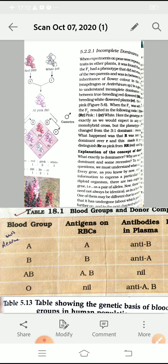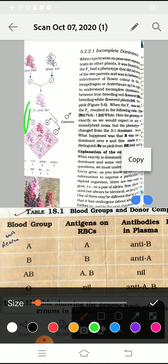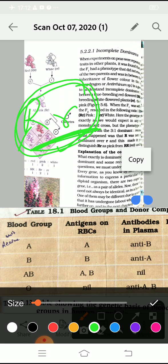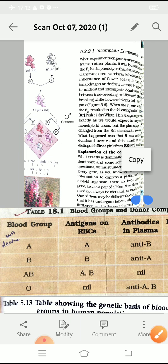So this phenomenon is not universal — we cannot always say that a character will be either dominant or recessive; it can sometimes be incomplete also. Incomplete dominance means that both genes express themselves neither as dominant nor as recessive. Both R capital and R small — neither shows itself dominant nor recessive; they both express partially in the form of hybrid. This is also an important question in board exams.